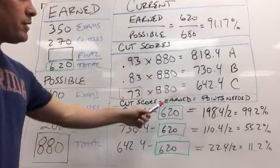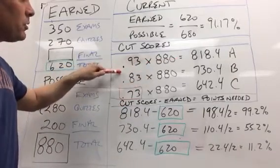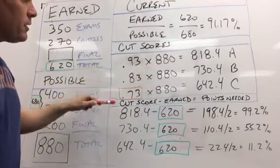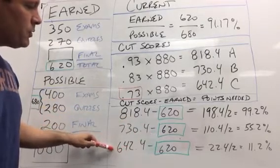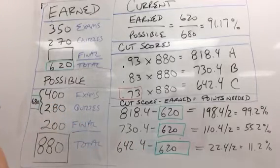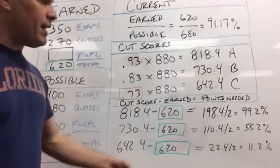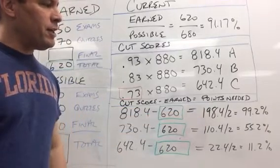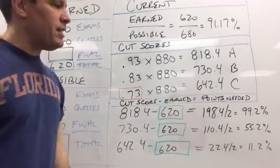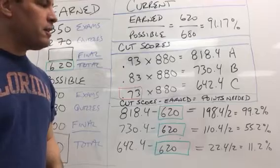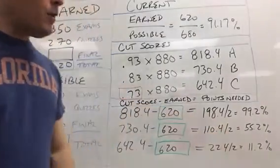It's the cut score minus what you've earned. So 818.4 is the cut score for an A. We multiplied the 0.93 times the 880. The cut score for a B is 730.4 minus 620 earned, and then 642.4 minus 620 for the C. So someone who has an A-minus going into the final, where the final is a little less than a quarter of the exam, to get an A they have to be almost perfect on the final—198.4. I think it's easier to understand percent, but you can see they need a 99.2% to get an A in the class. But what do they need to get a B in the class? They need a 55.2%.